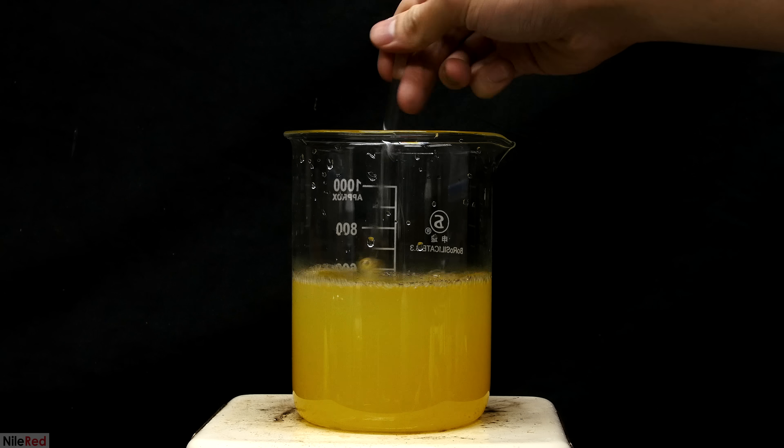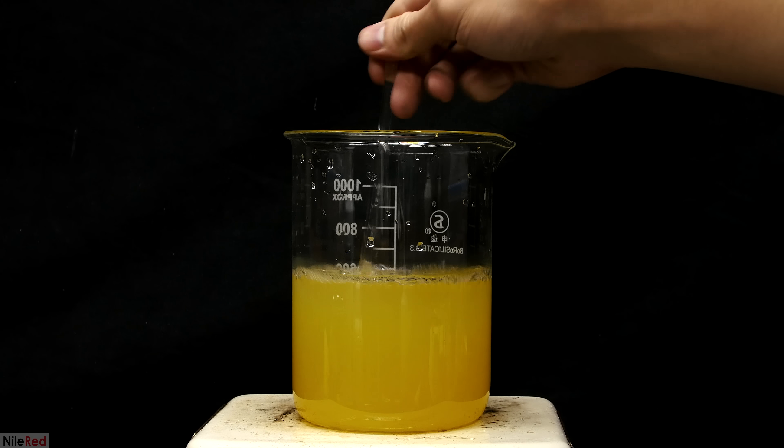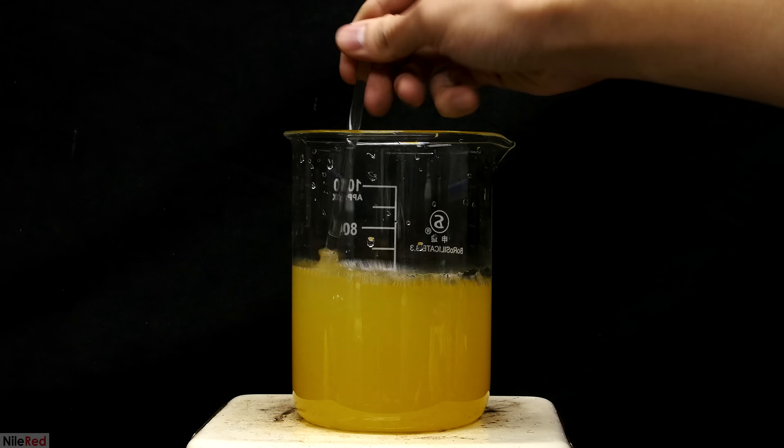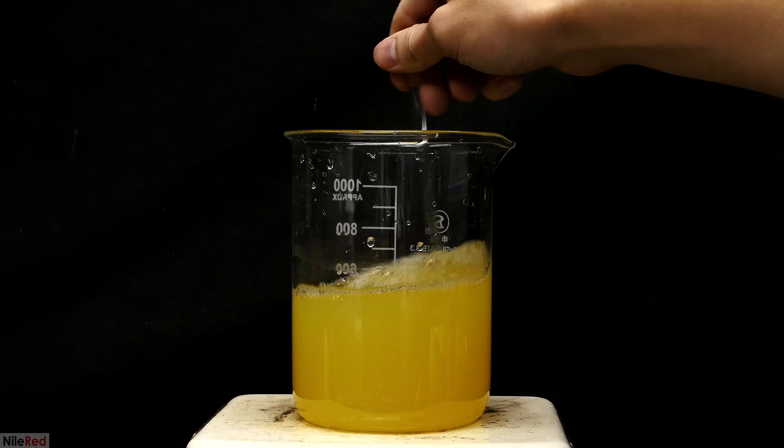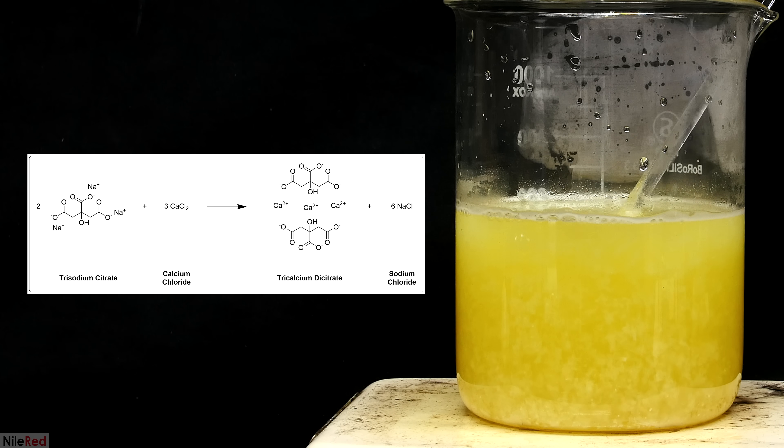Not much is going to happen at room temperature and to get the reaction going we have to heat it up to boiling. As the solution gets hotter we start to see calcium citrate forming.